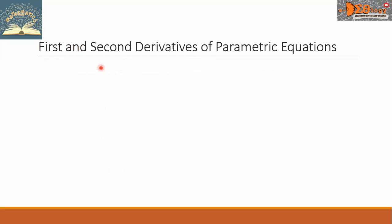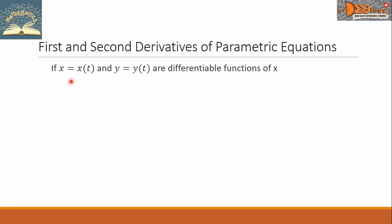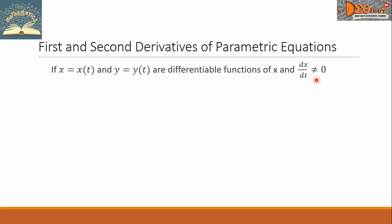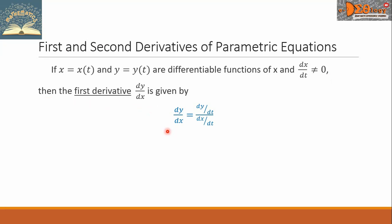Let us go now to the first and second derivatives of parametric equations. If x equals x of t and y equals y of t are differentiable functions of x, and dx over dt is not equal to 0, then the first derivative dy over dx is given by dy over dx equals dy over dt — the derivative of the y function with respect to t — all over dx over dt, the derivative of the function x with respect to t.